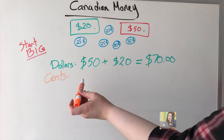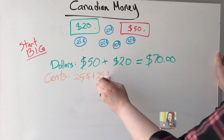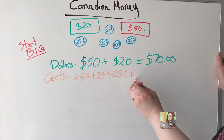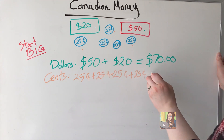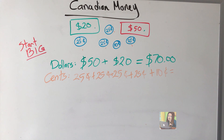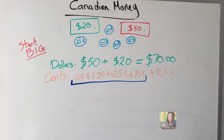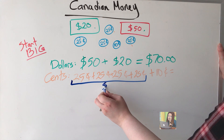Now I go to my cents. I have the biggest ones: 25 cents plus 25 cents, plus 25 cents — that's four quarters plus 10 cents. I noticed right away that I had a lot of 25s, so I'm going to group them. I have one, two, three, four quarters. If I remember from earlier, four quarters gives me a dollar: 25, 50, 75, 100 — so this is one dollar.